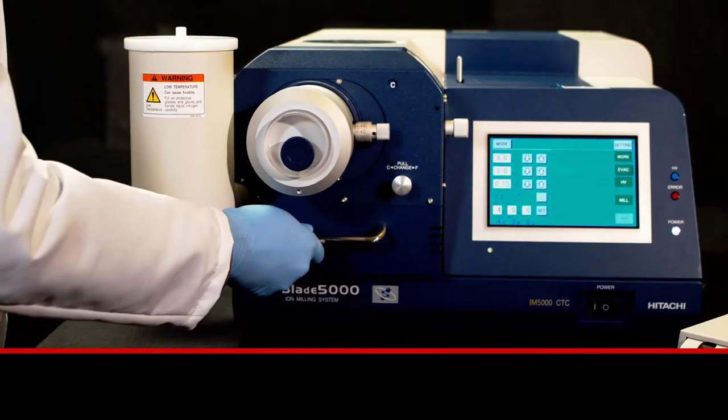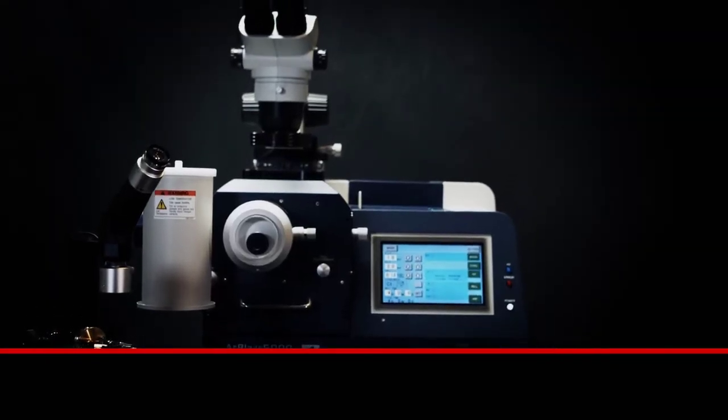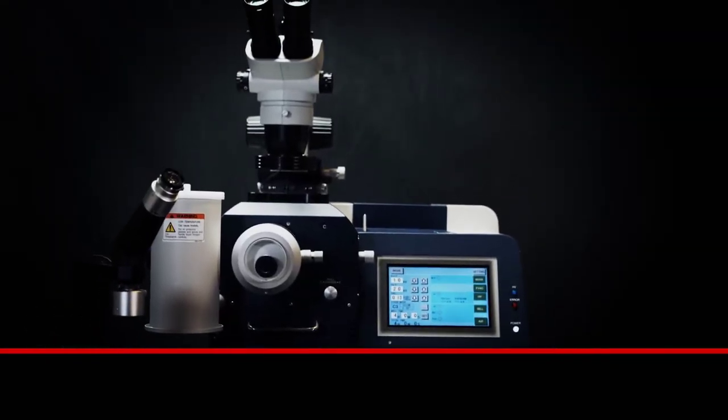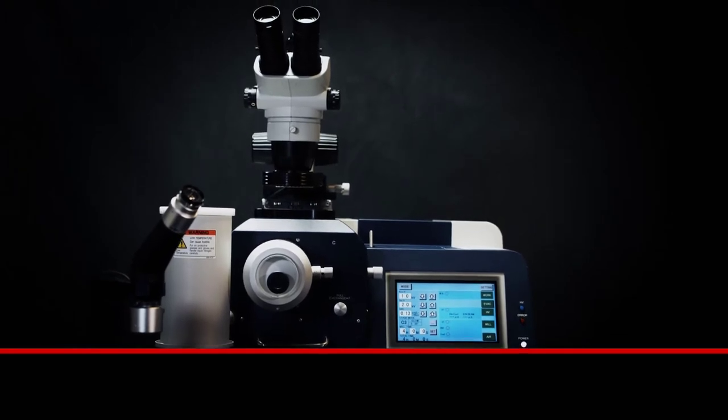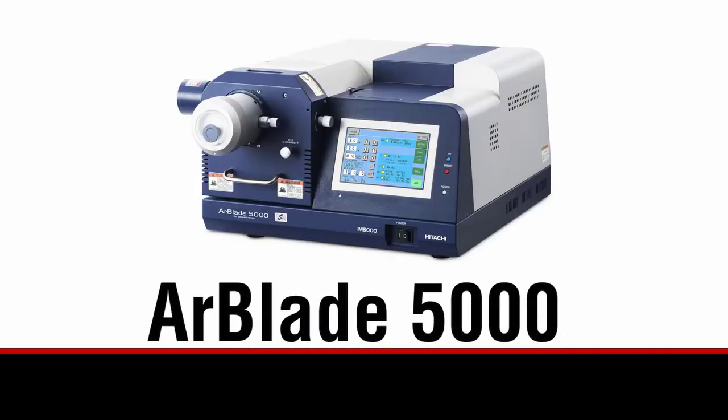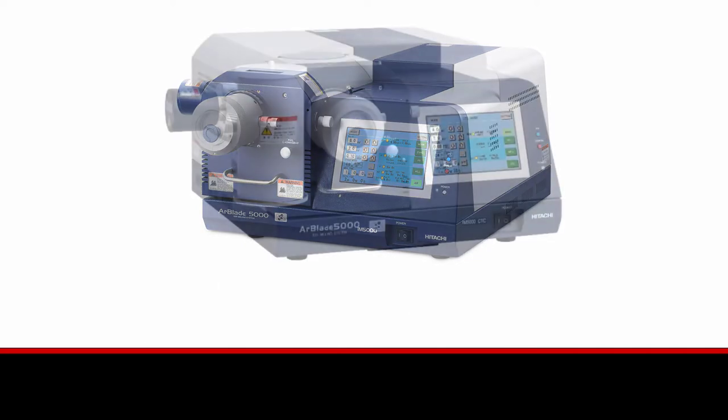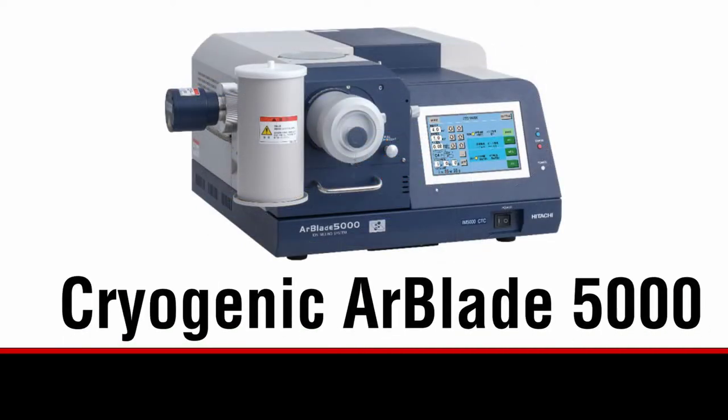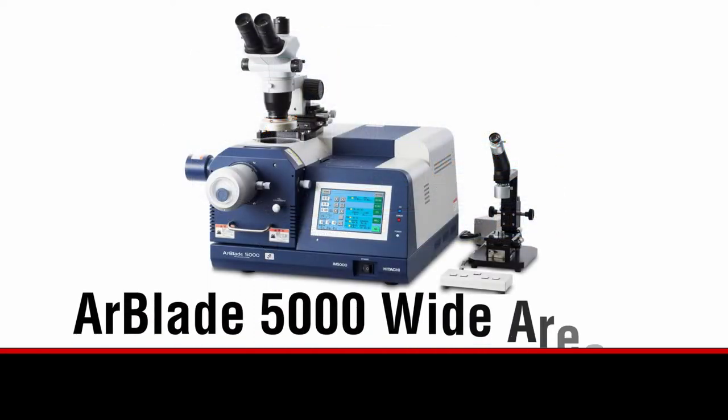The ArBlade 5000 is born of Hitachi's desire to offer the ultimate system for sample preparation. Hitachi's hybrid instrument is the first of its kind to offer both cross section and flat milling in one system combined with a host of capabilities such as cryogenic processing, air protection, and low temperature milling.